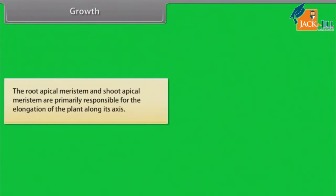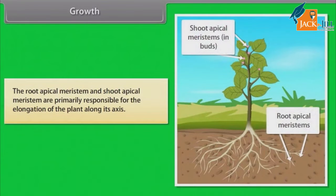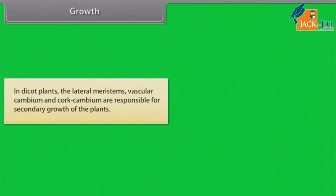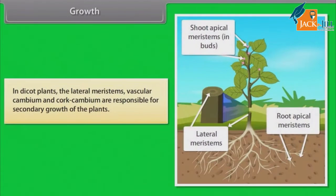The root apical meristem and shoot apical meristem are primarily responsible for the elongation of the plant along its axis. In dicot plants, the lateral meristems — vascular cambium and cork cambium — are responsible for secondary growth of the plants.